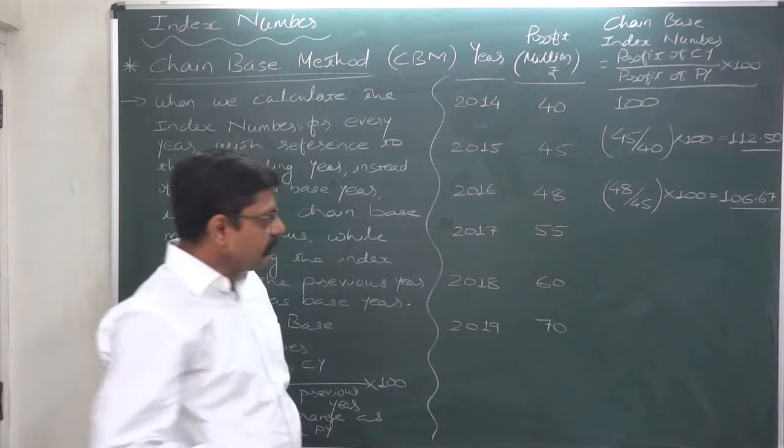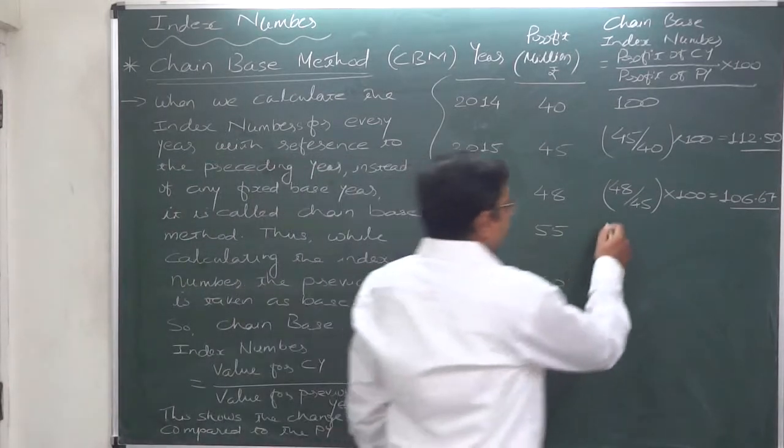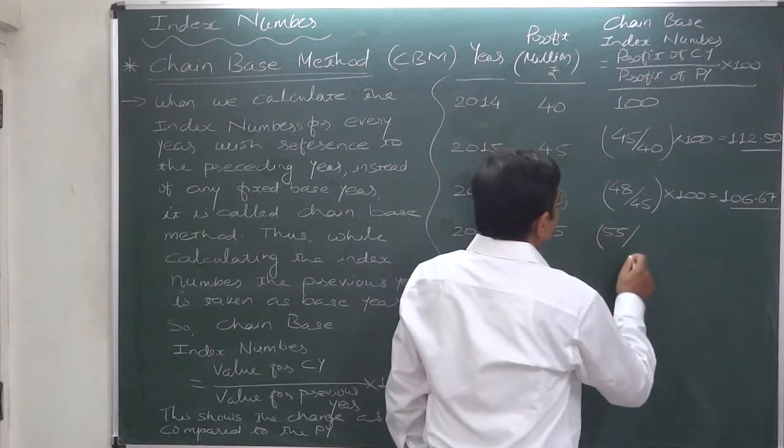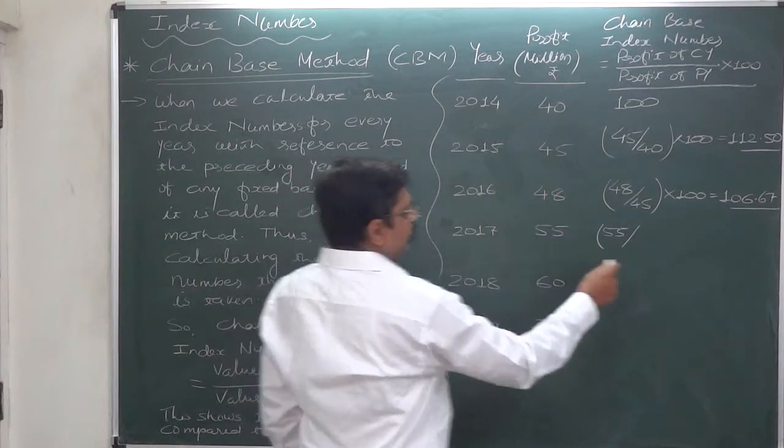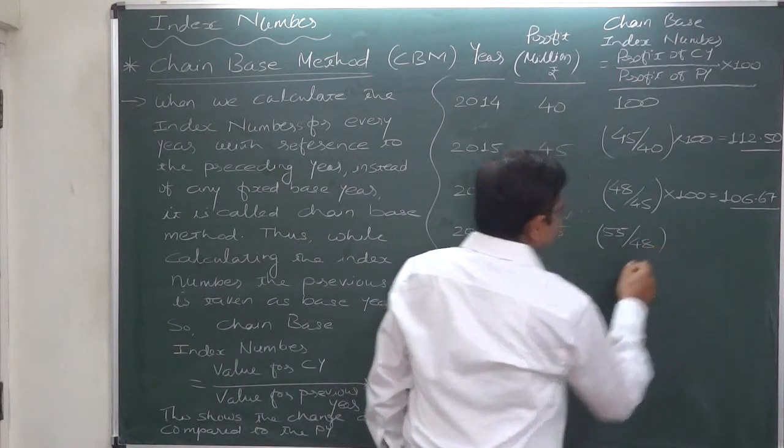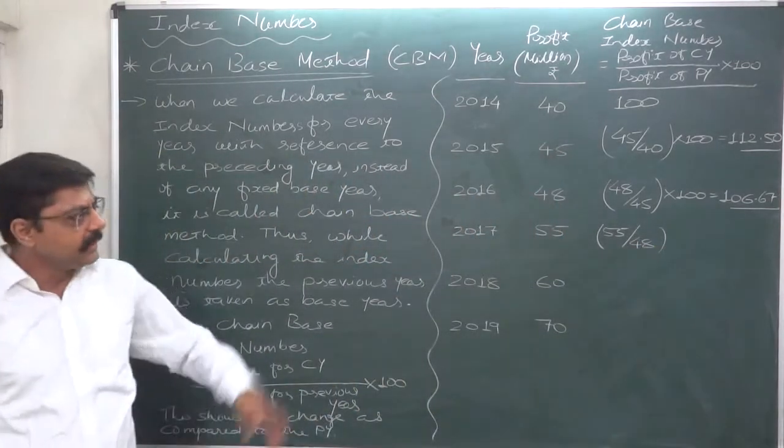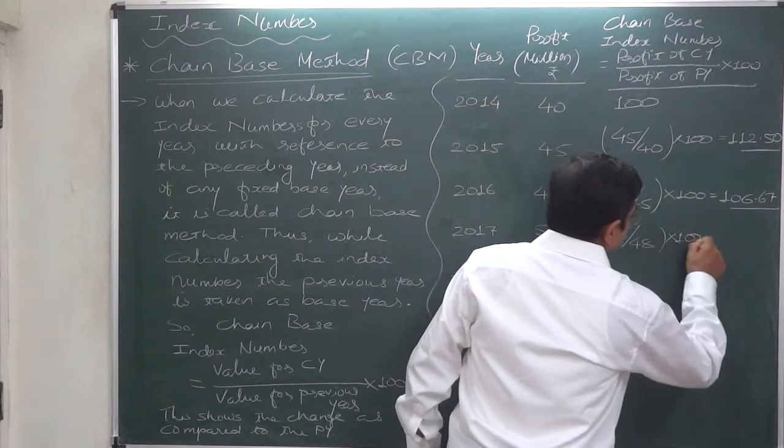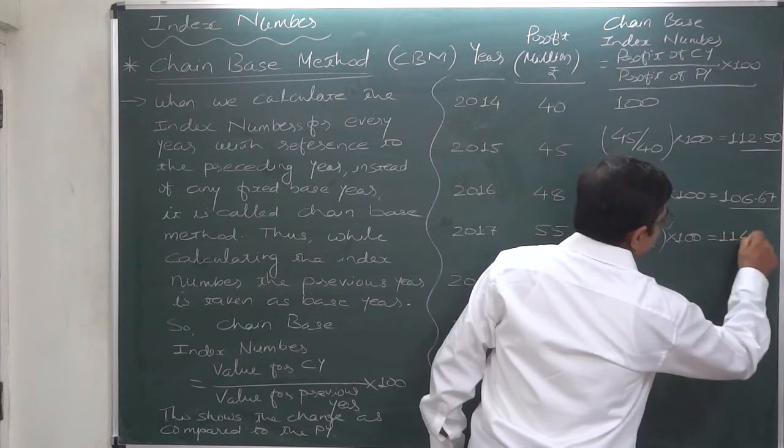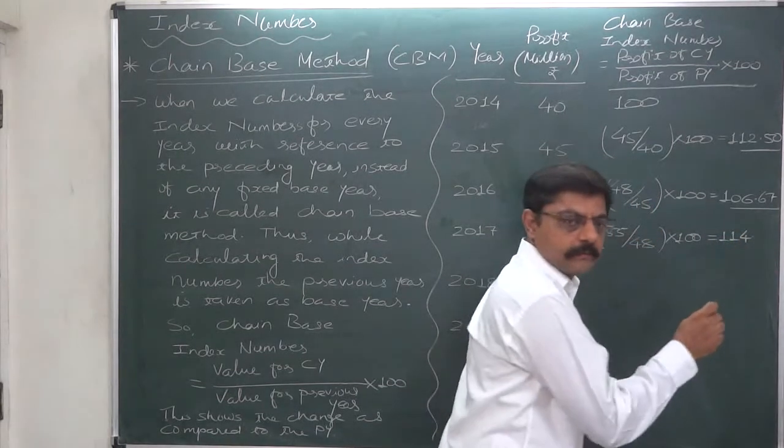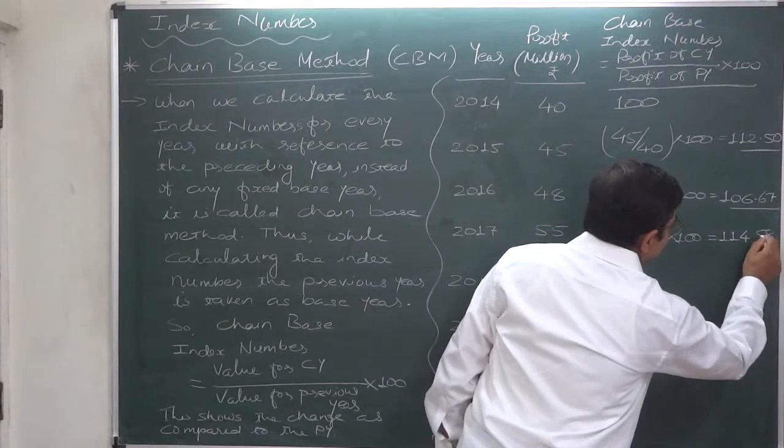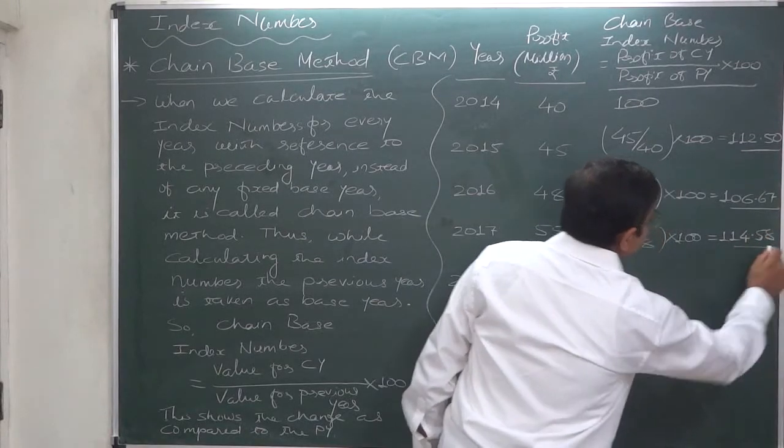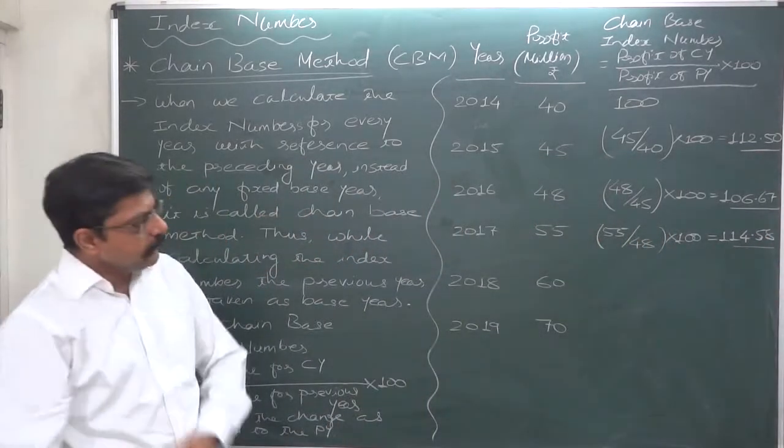In 2017, the profit is 55 divided by 48, because for 2017, 2016 will become the previous year—previous year rather, Base year. It comes to 114.58. Please keep two decimal places. So in 2017, profit increased by 14.58% as compared to 2016.